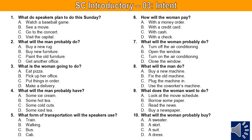Question 7 refers to the following conversation. Woman: 'It's really cold in here. Why don't you turn off the air conditioning?' Man: 'Why would the air conditioning be on? It's winter.' Woman: 'Oh, I see the problem. Someone left the window open.' Number 7: What will the woman probably do?